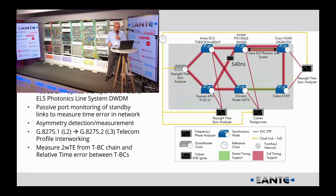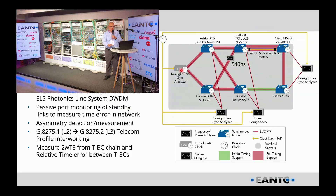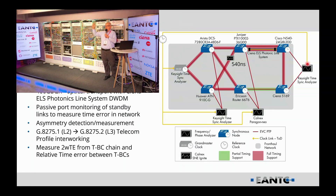This might make a bit more sense if we see a topology. We have a ring where the Microchip is providing the 10 MHz and the time of day. The Keysight device is acting as a grand master and is also measuring the input coming back from the devices to measure the difference between what's coming back from the network. The Paragon Neo is also measuring the time coming from the Juniper device and the Ericsson device, and at the end of the network Keysight measures the absolute and relative time error between the Cisco device and the Ciena device.